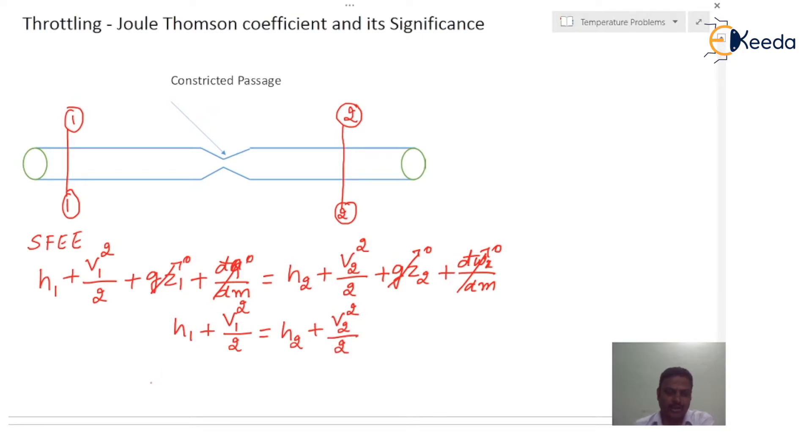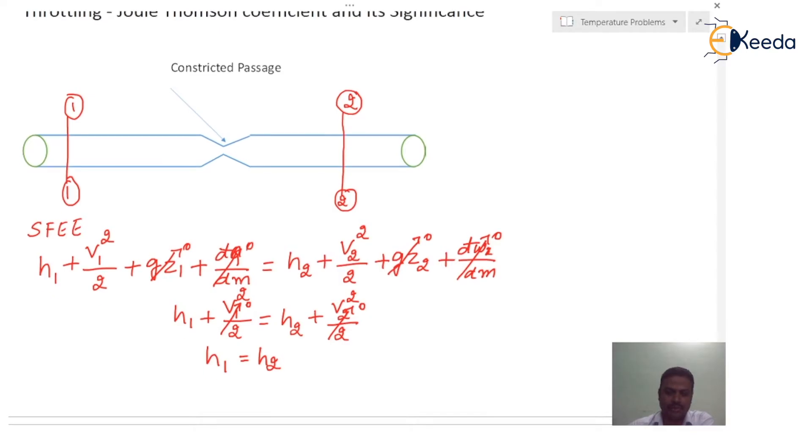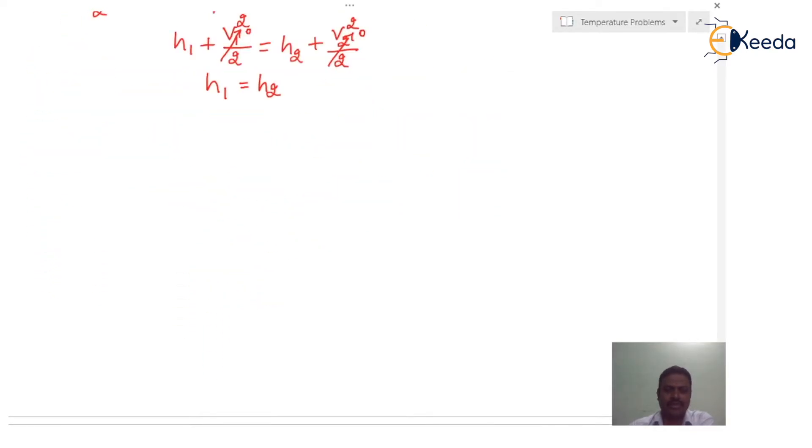In throttling, the flow velocities are very low and the kinetic energy is negligible, so this term also becomes zero. Then the equation reduces to h1 = h2. It is nothing but the enthalpy before throttling is equal to enthalpy after throttling.